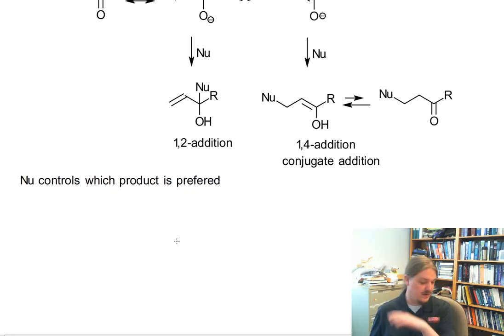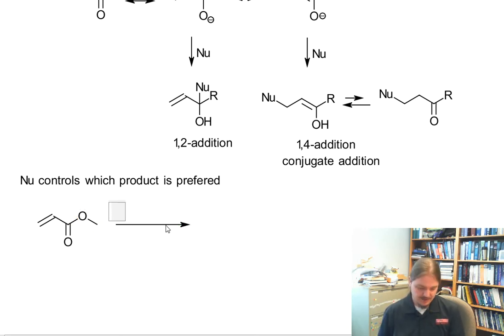So I'm just going to draw for you one example with an example mechanism, and then we will go from there. So let's pick this methyl acrylate, and we're going to use sodium thiomethoxide (NaSCH2CH3), and this will be done in the corresponding thiol as the solvent.